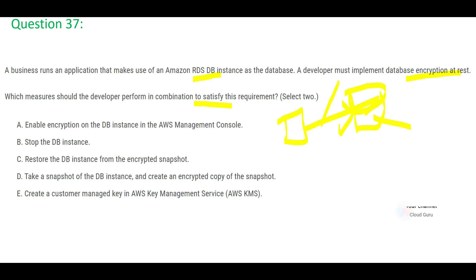Encryption in transit is when data is on the move between an application and the database — done using TLS so nobody can steal data in transit. Here we want encryption at rest, so TLS is not used. The first option says enable encryption on the DB instance, but this is not available for an already-running RDS instance. You cannot simply change the encryption setting on existing data — this is wrong.